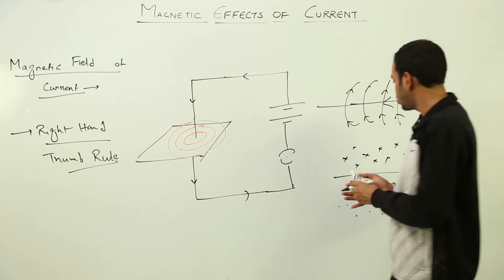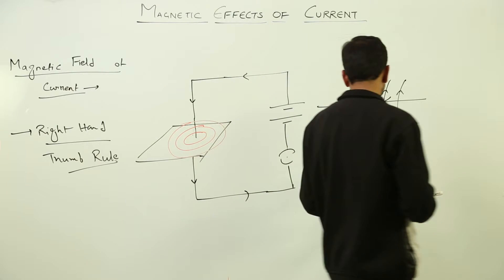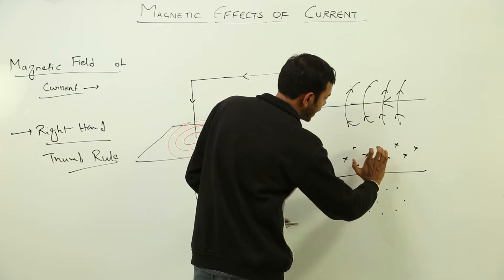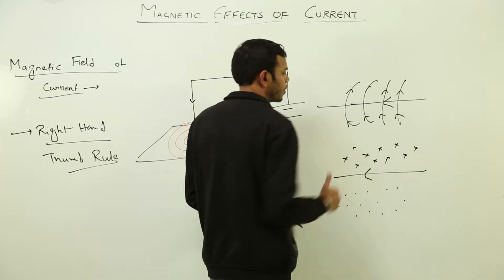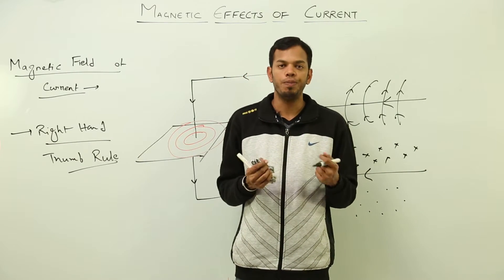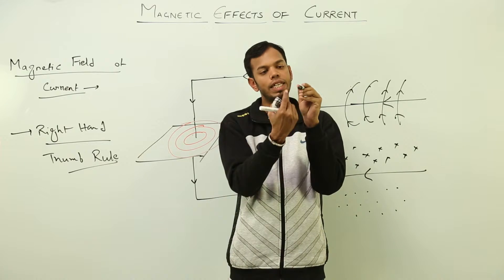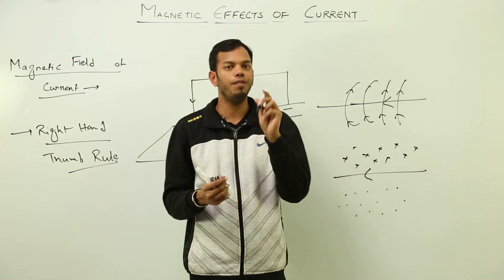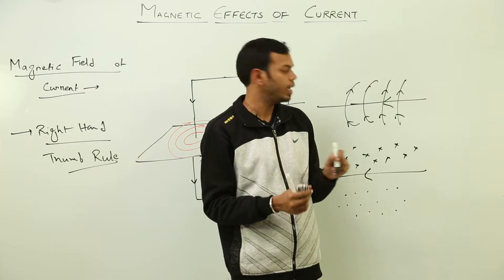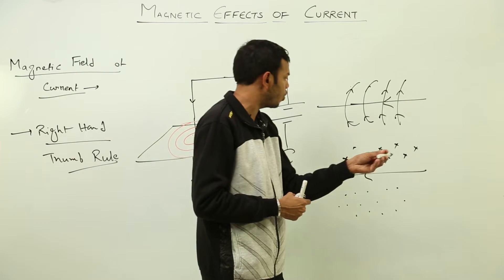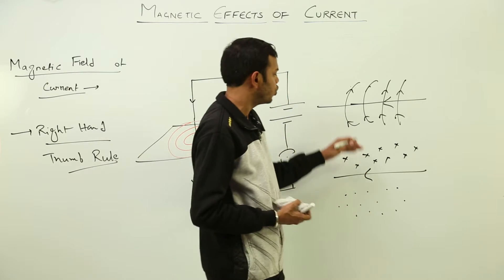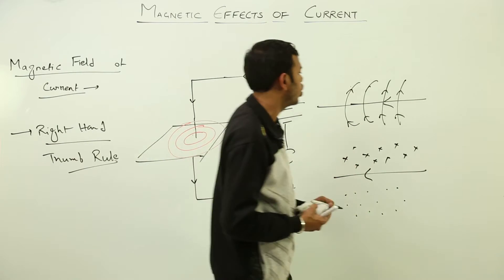According to the right-hand thumb rule, fingers go inside this region and come out from this region. When you see an arrow coming towards you, you see only the circular tip — like a dot. But when an arrow is going away from you, you see the cross at the back. So when something is entering the surface, you see a cross; when it is emerging out, you see a dot. That is why magnetic field is represented in terms of dots and crosses.